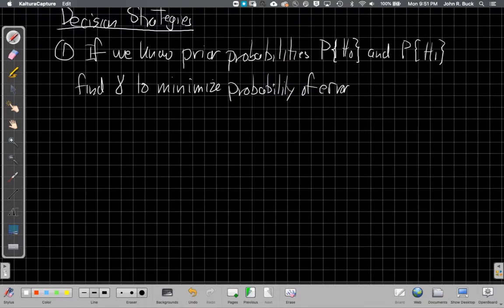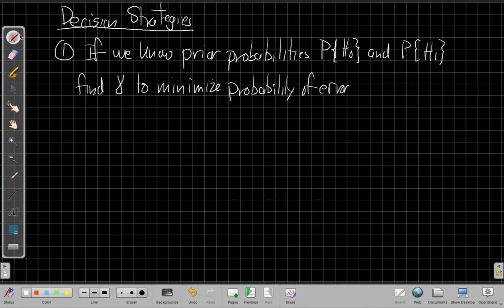The first case is if we know the prior probabilities of the two hypotheses. That's like we know how likely H0 is and what percentage of the time we have H0 and what percentage we have H1. We can choose a threshold. We can set this up as a nice optimization problem, choosing gamma to minimize the probability of error, which is a combined wrong decision probability, and do that very well. The problem for us, and we're not going to probably never use that in this class.